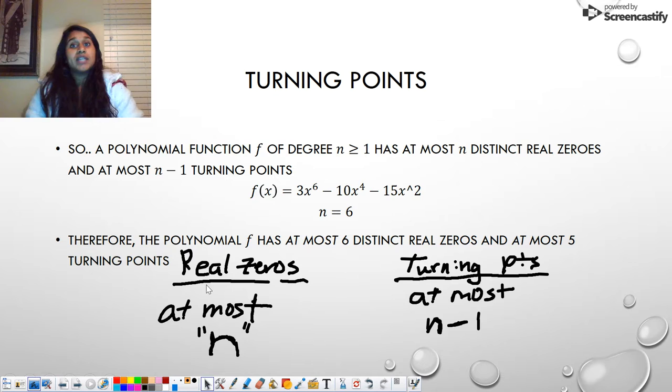So when we're talking about real zeros, if I ever ask you how many real zeros does this polynomial have, then you're going to tell me whatever n equals. When you talk about turning points, you're going to tell me n minus 1. But what's that phrase that I wrote here that is so important for us? That phrase is at most.